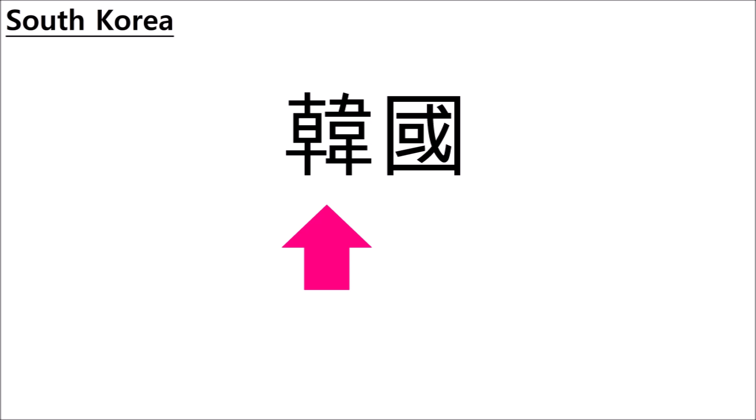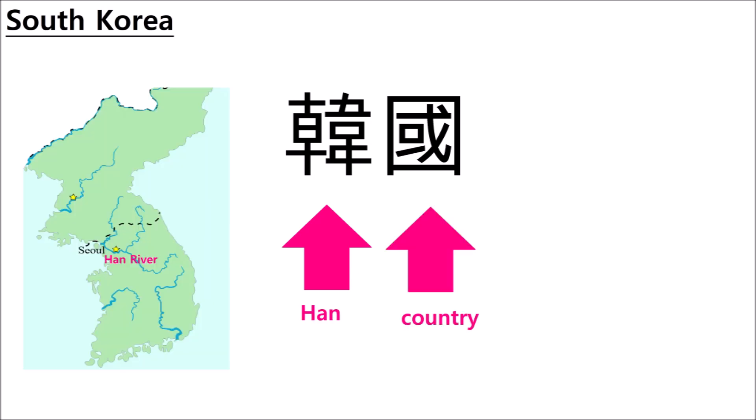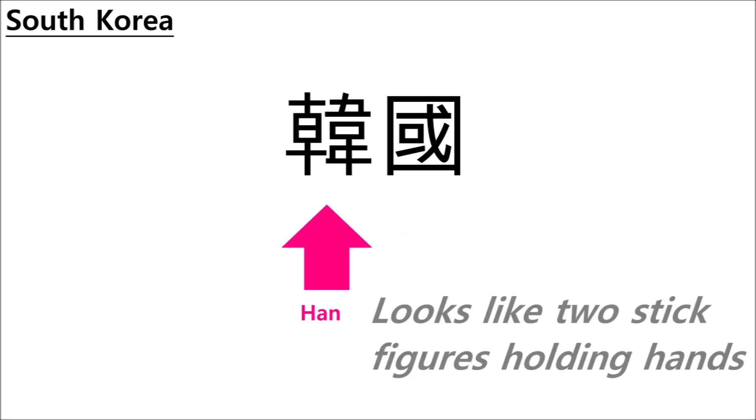And this means Han, which is the name of the major river in South Korea. South Korea is known as Han country. To say South Korea in Korean, it is Hanguk — guk is the word for country. This character looks like two stick figures holding hands — or should I say holding Hans.